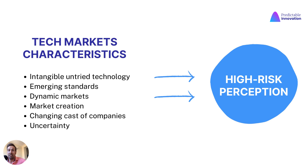It's mainly because technology is a high-risk perception product. The tech market characteristics include intangible and untried technology, emerging standards everywhere, very dynamic markets that change very quickly, a lot of market creation, and a changing cast of companies — new companies and companies that die. That leads to a lot of uncertainty for our customer, the central piece of our market strategy, and a high-risk perception of technology products.